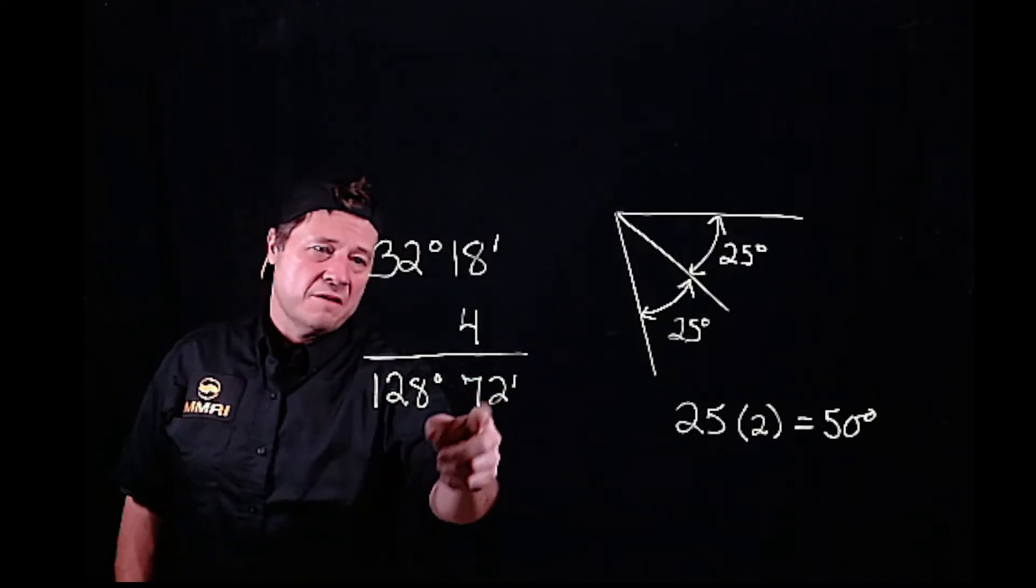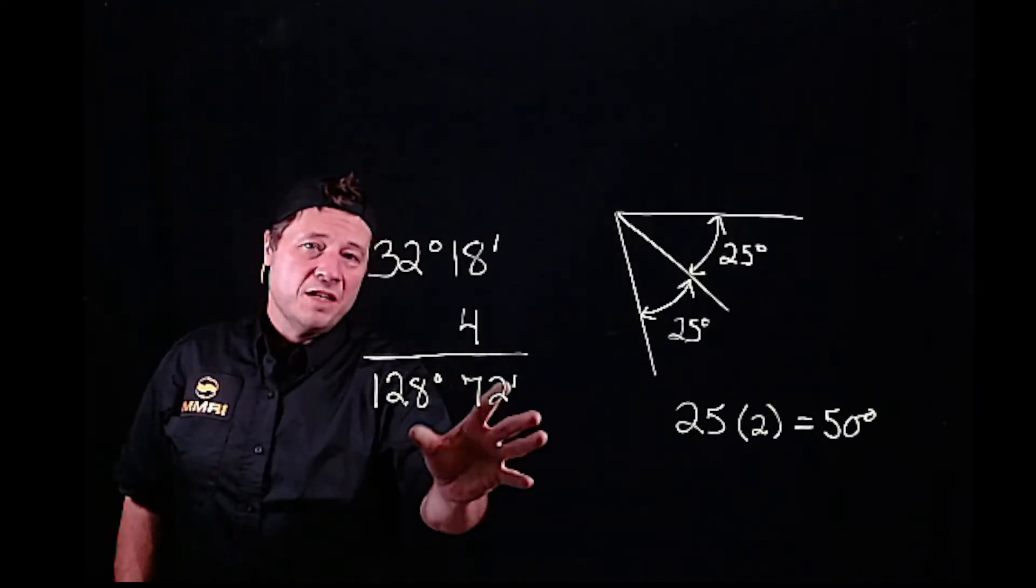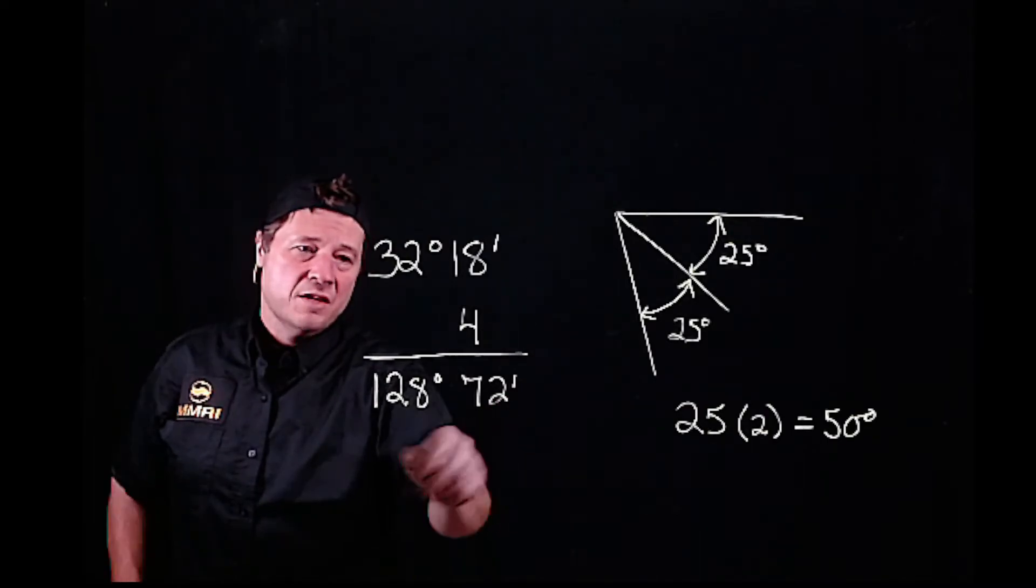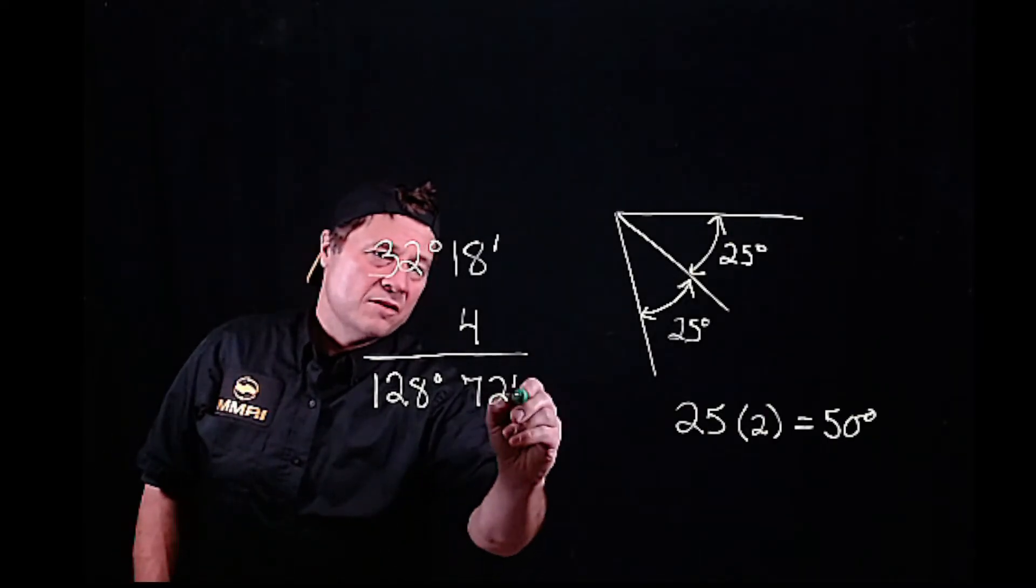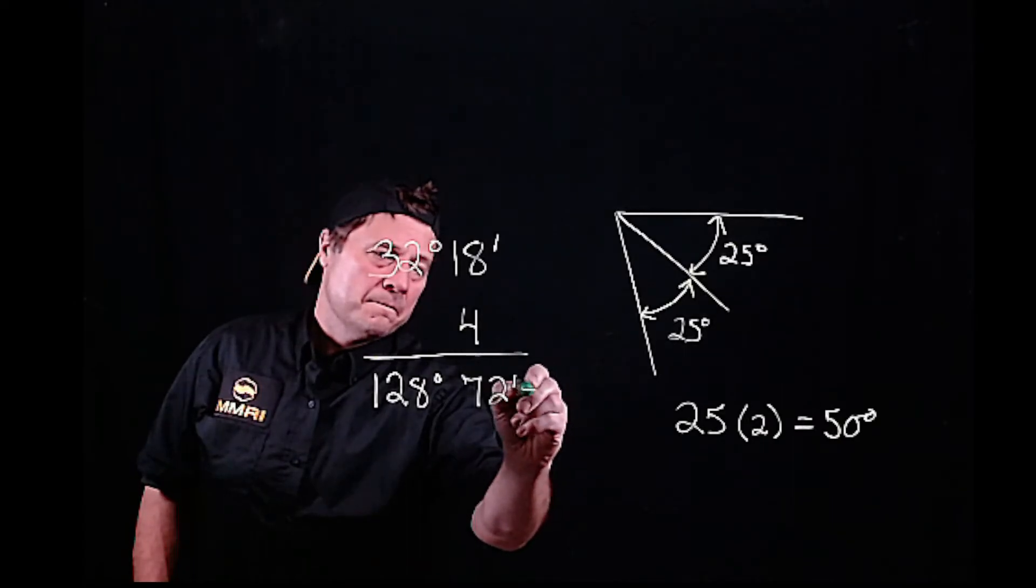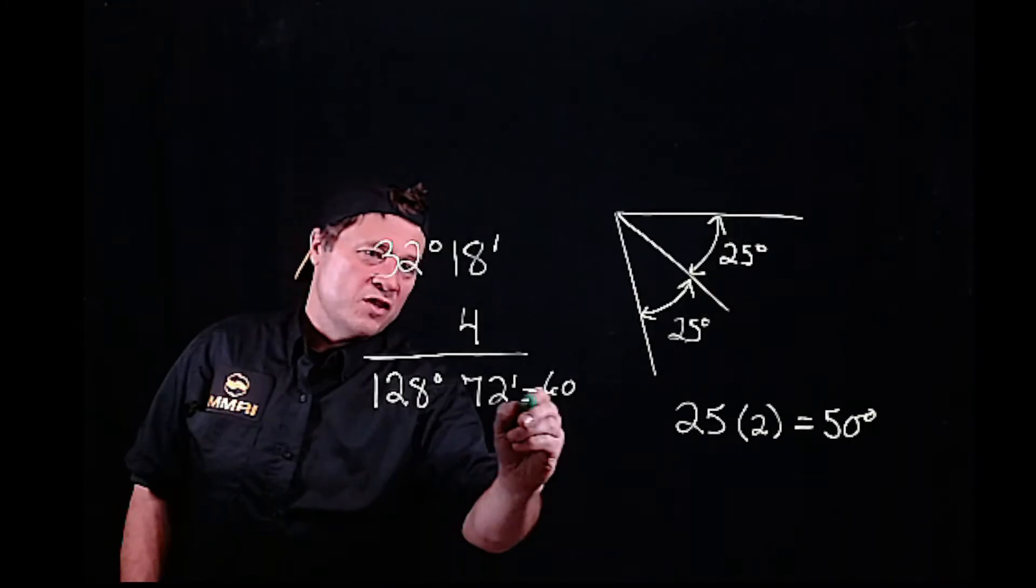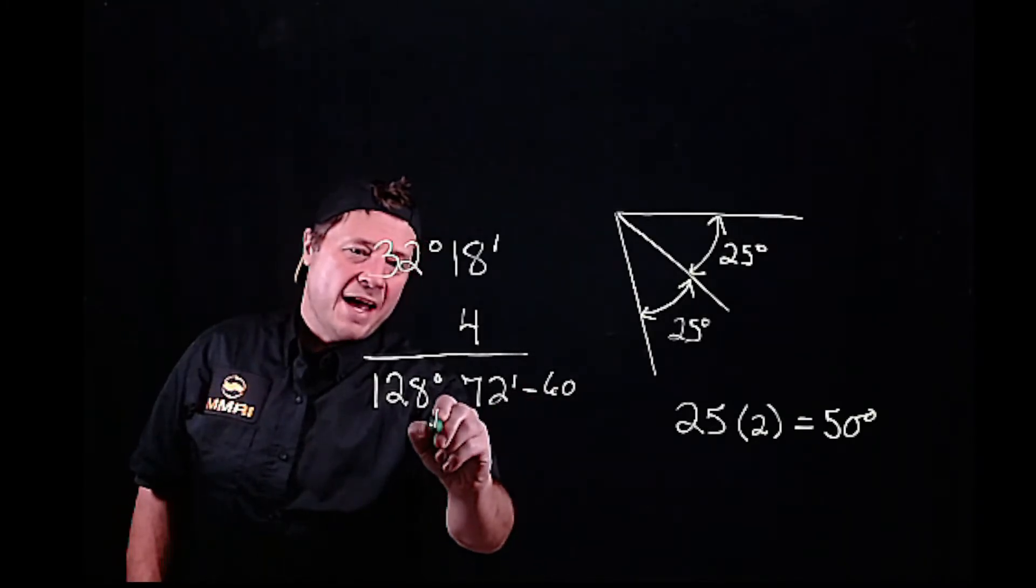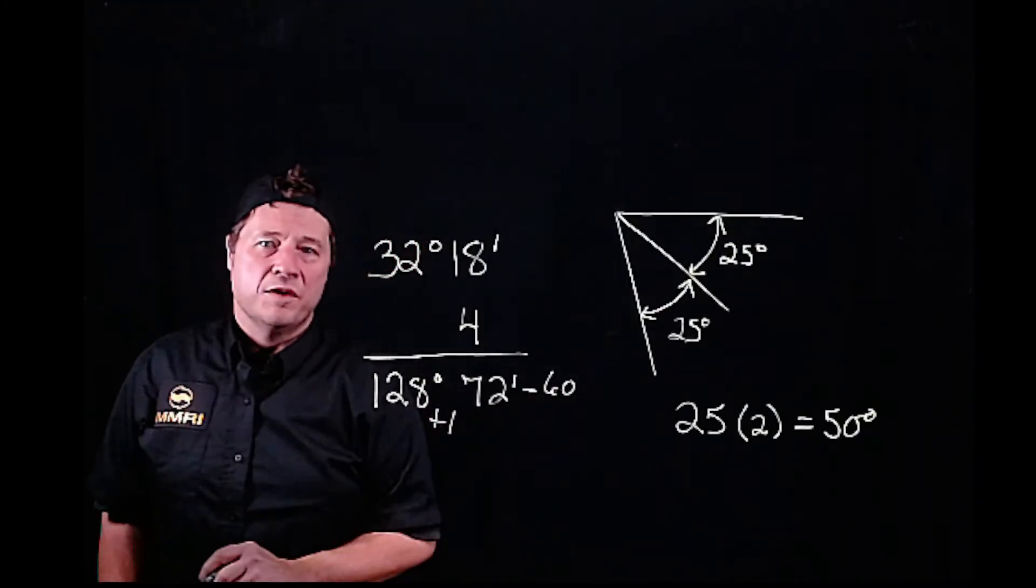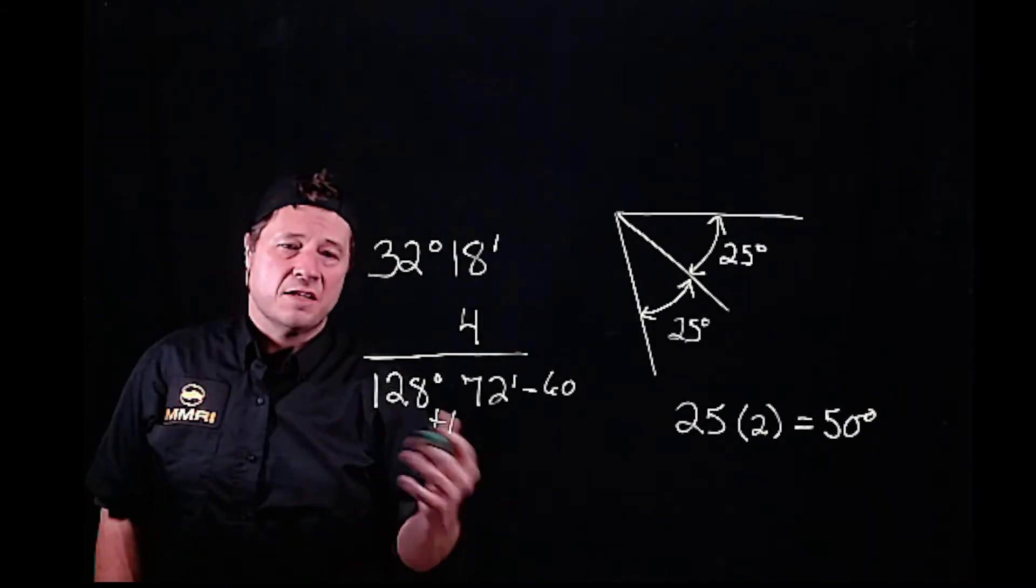72 minutes is above 60 minutes, so we need to subtract 60 from the 72. If we subtract 60, then we add 1 to the 128 because 60 minutes equals 1 degree.